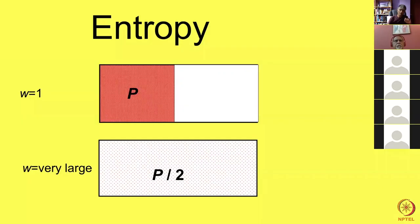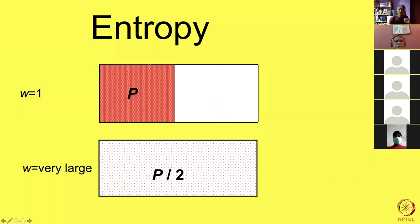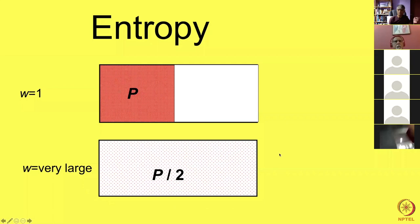I'll explain configurational entropy again here. Consider a cylinder of gas where all the gas atoms are on one side — they've all moved in the same direction, ending up in half the chamber with pressure p in that region and no pressure on the other side. There is only one arrangement of this configuration where all atoms have moved simultaneously into one half of the cylinder. If you allow the atoms to fill all space, the number of arrangements is very large and the pressure would be halved — the probability of the disordered state is much greater than the probability of all atoms moving simultaneously into one half.